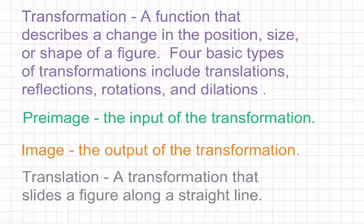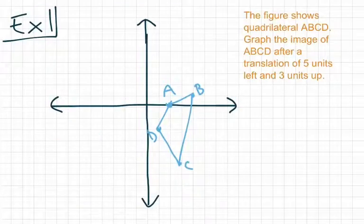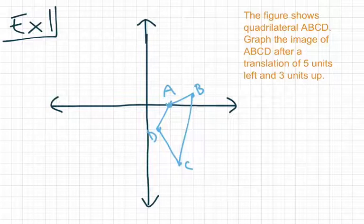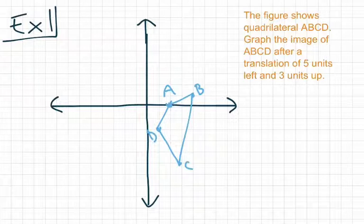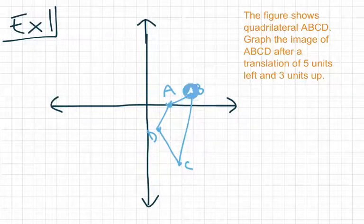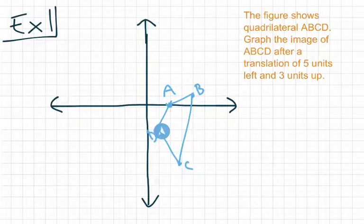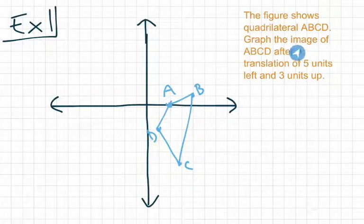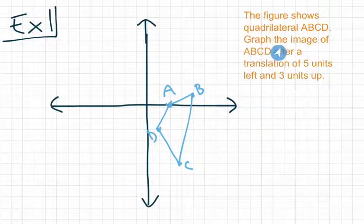So let's take a look at how we can identify the rule for a translation and use the rule for a translation to identify the image of the graph. For our first example, we have quadrilateral ABCD. The figure shows quadrilateral ABCD. We want to graph the image of ABCD after a translation of five units left and three units up. What we're going to do is take each point, all four of these points, and one at a time, we're going to move the points five units left and then three units up.